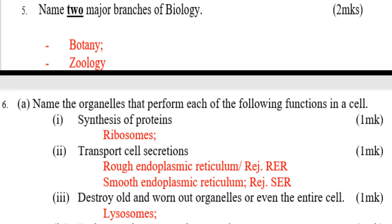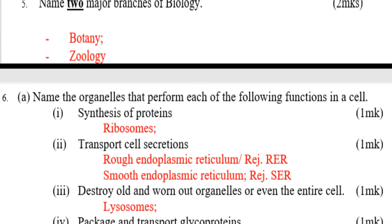Number three: the organelle that destroys old and worn-out organelles or even entire cells — that is lysosomes. Lysosomes destroy old and worn-out organelles or even entire cells. Number four, Roman numeral four: the organelle that packages and transports glycoproteins — that is the Golgi apparatus, also called Golgi bodies.